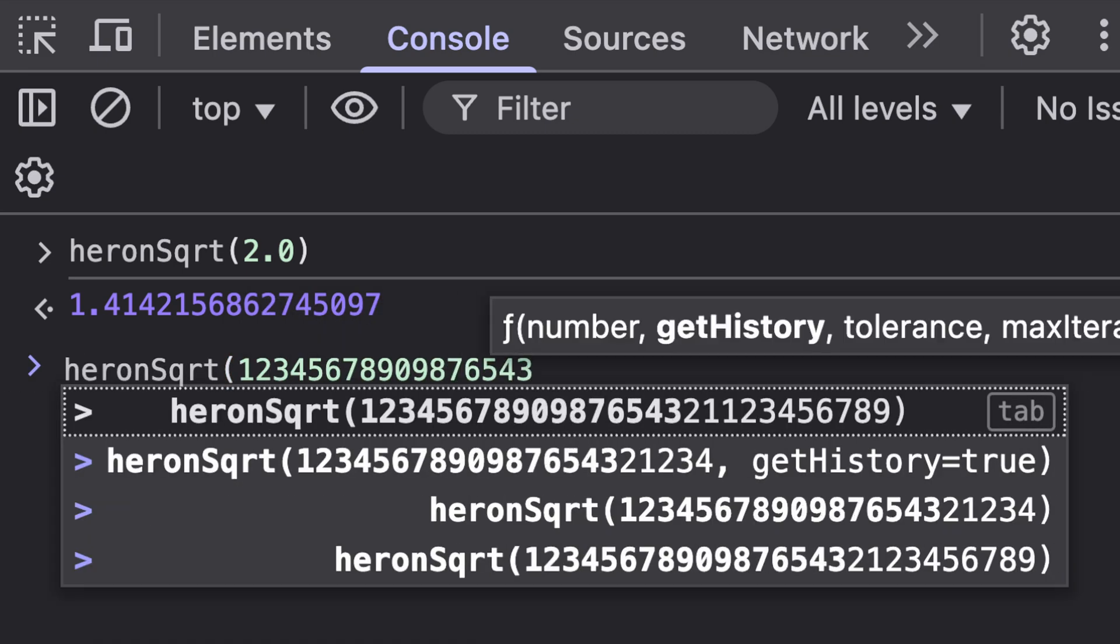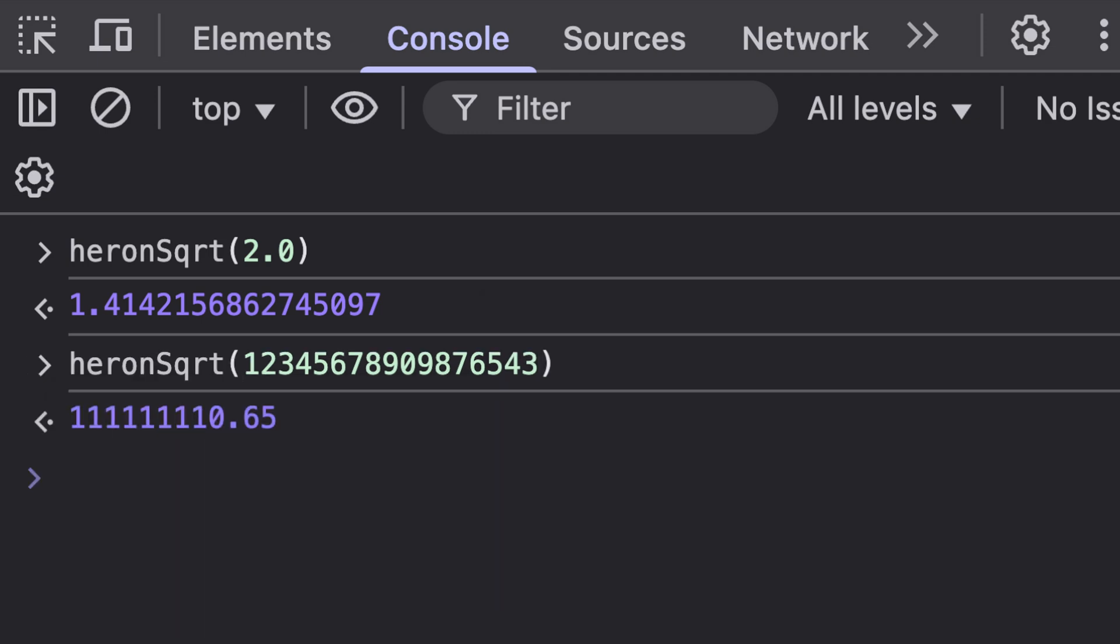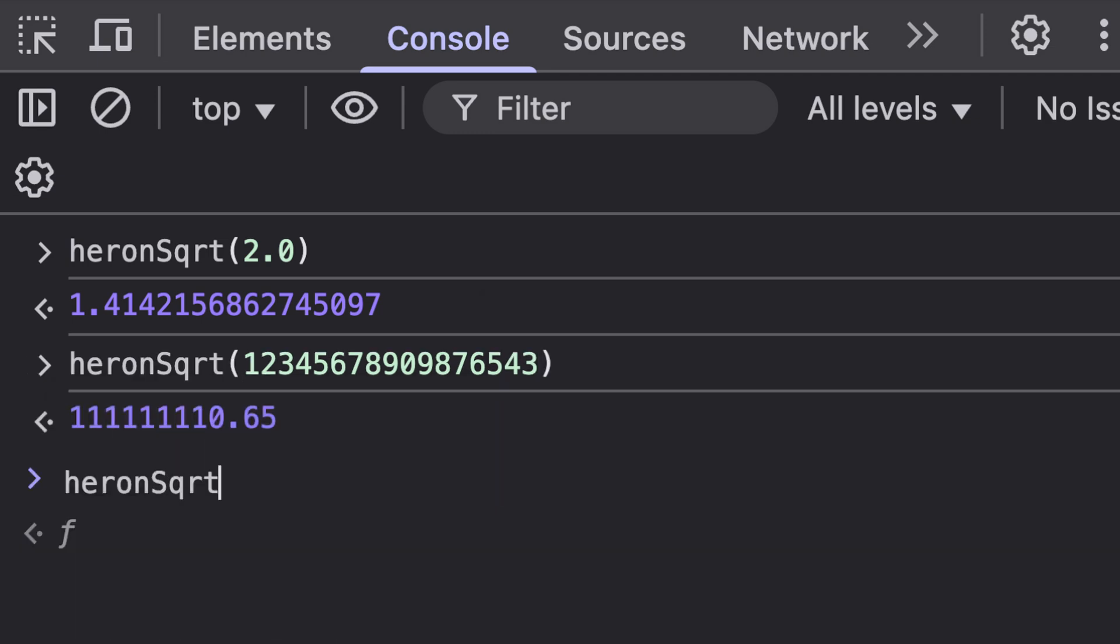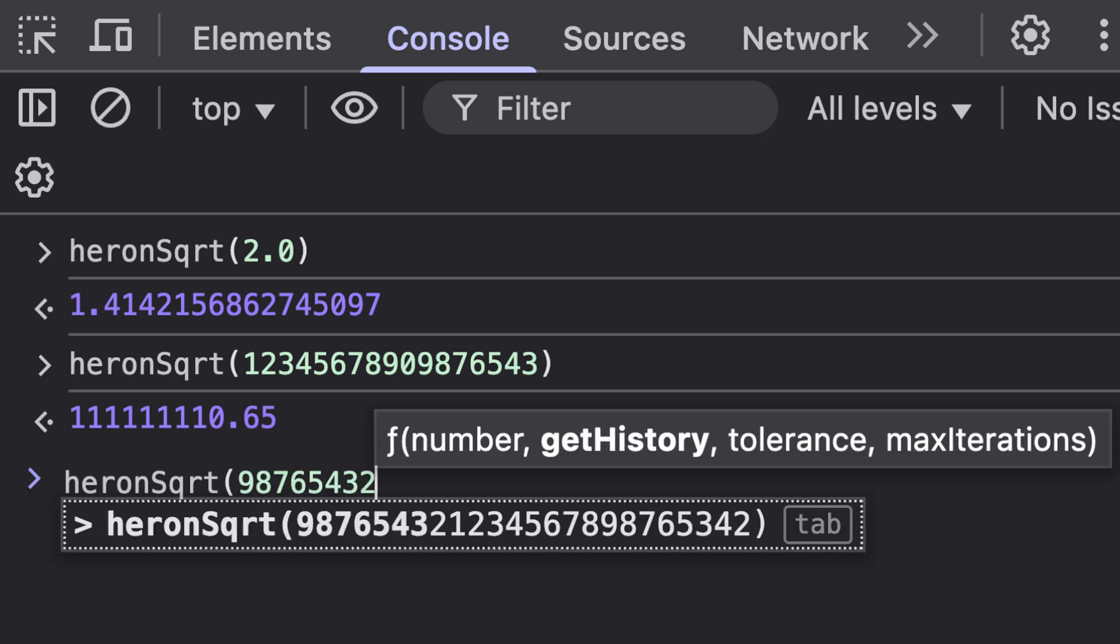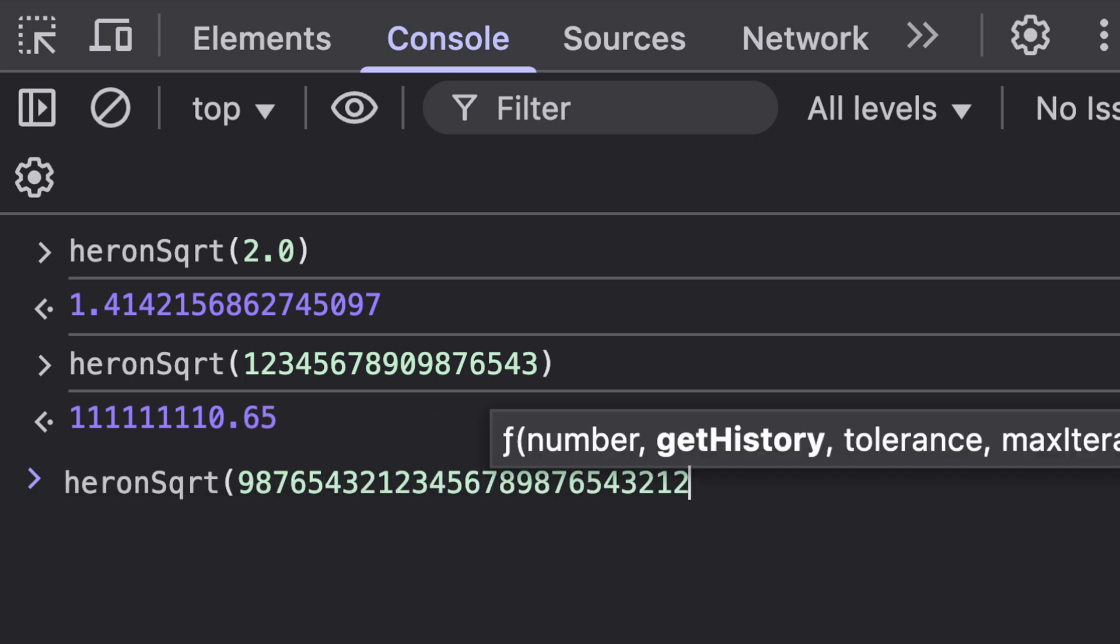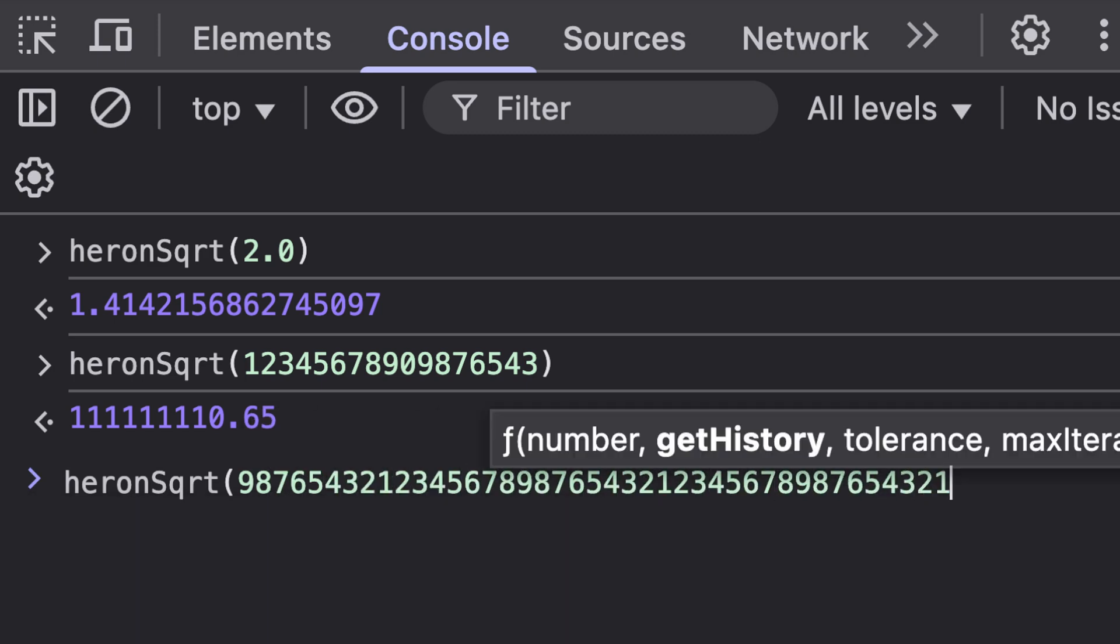Even with numbers of unthinkable magnitude, we don't have to wait a second. A little side explanation here. Heron's method has quadratic convergence, meaning the number of correct digits roughly doubles with each iteration. Accurately enough for us.